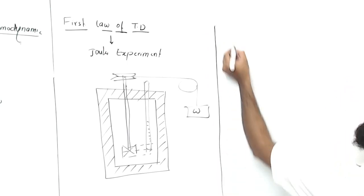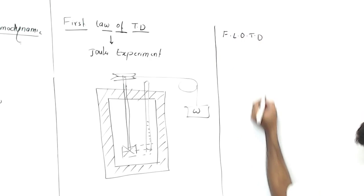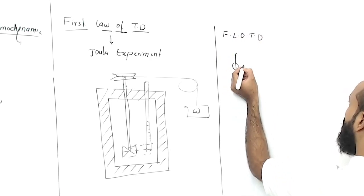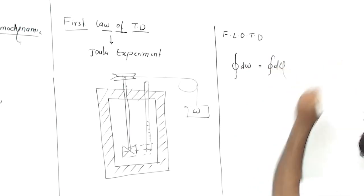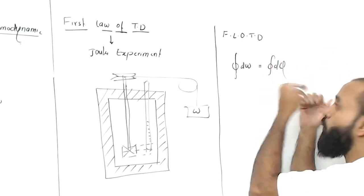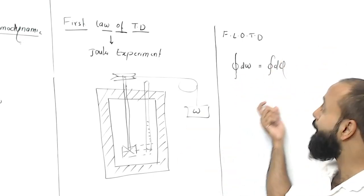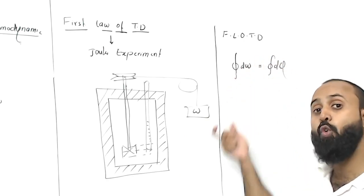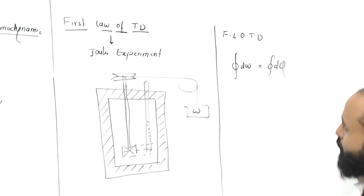According to the first law of thermodynamics, you can say that the summation of work equals the summation of heat. Whatever amount of heat you have transferred in the system, considering all those heats, and whatever work you have obtained in the entire cycle - when you compare both, their magnitudes will be the same.